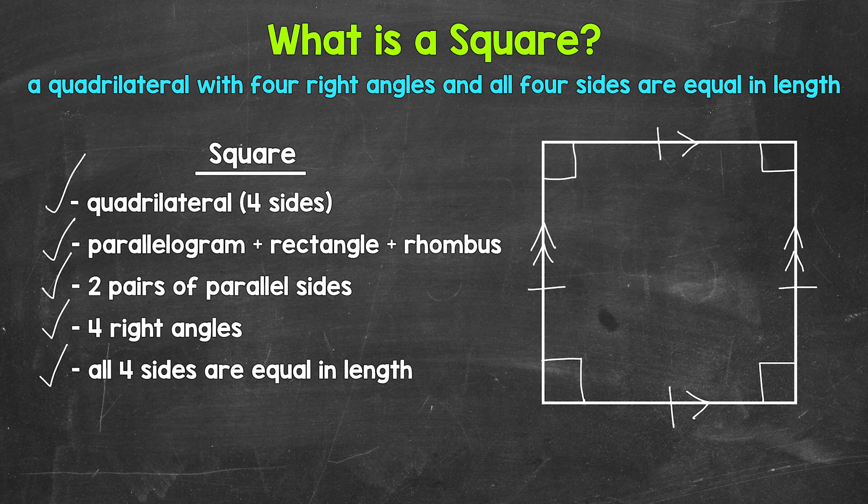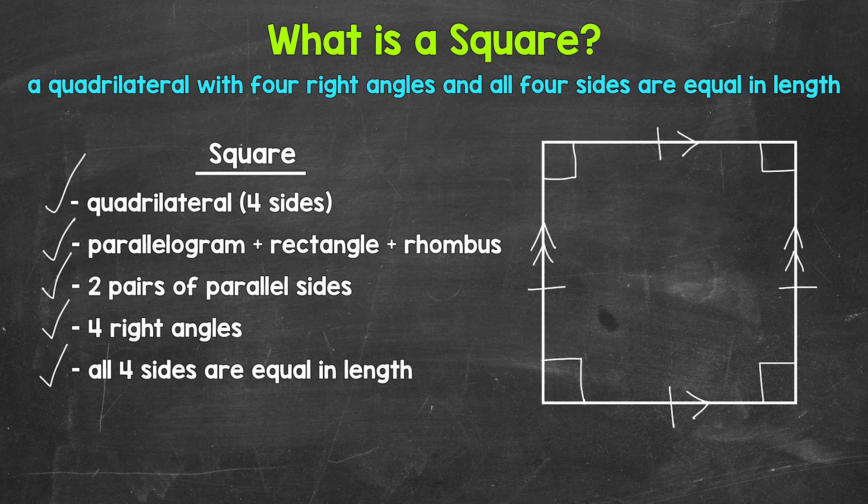Now simply put, a square is a quadrilateral with four right angles and all four sides are equal in length. I hope that helped.